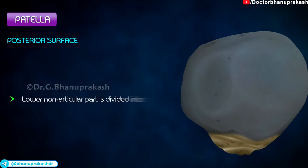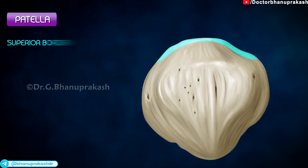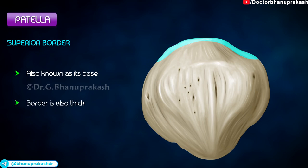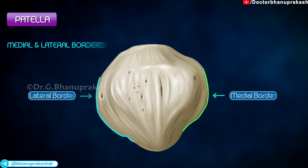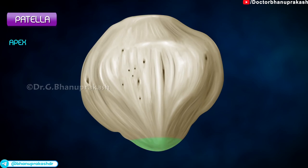The lower non-articular part is divided into the upper area and lower area. Superior border: it is also known as its base, and this border is thick. Medial and lateral borders. Apex: it is sharp and directed downwards.